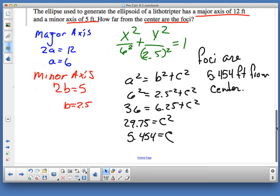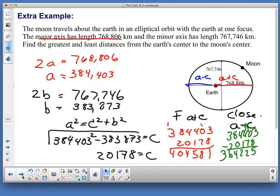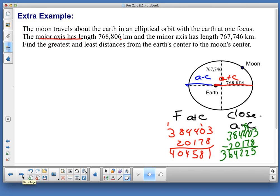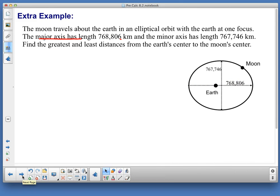Well, we've got that. That's the end of today. I just want to make sure that you're, oh, we forgot about the extra example. I'm sorry about that. I want to make sure that we get this one, too. A moon travels about the earth in elliptical orbit with the earth at one focus. So, the earth is at a focus. This is one focus. The major axis has length 768,806 kilometers, and the minor axis length is 767,746 kilometers. Find the greatest and least distances from the earth's center to the moon's center.